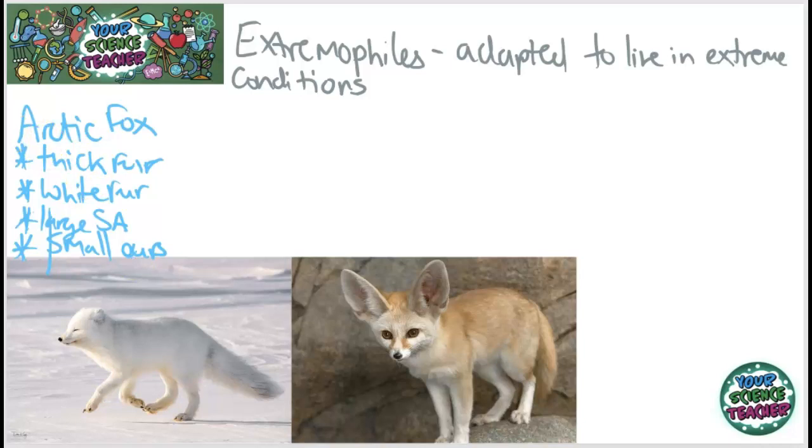And of course it has all of the generic adaptations of a fox. It will have incredibly good smell so that it can smell out its prey that might be living beneath the ice, and it will have sharp claws so that it can hunt and also them big sharp teeth.